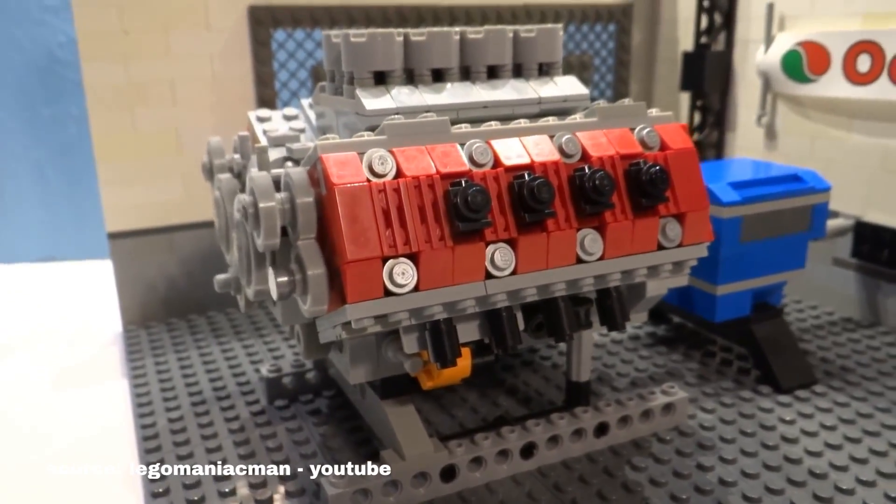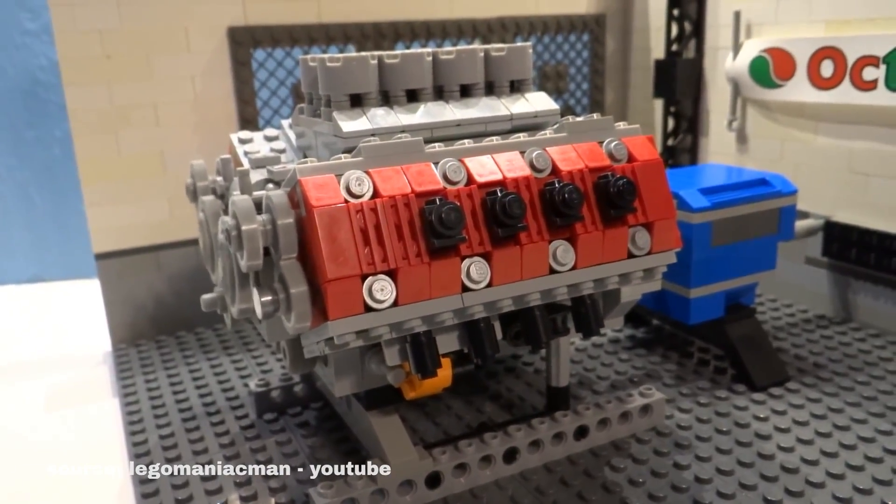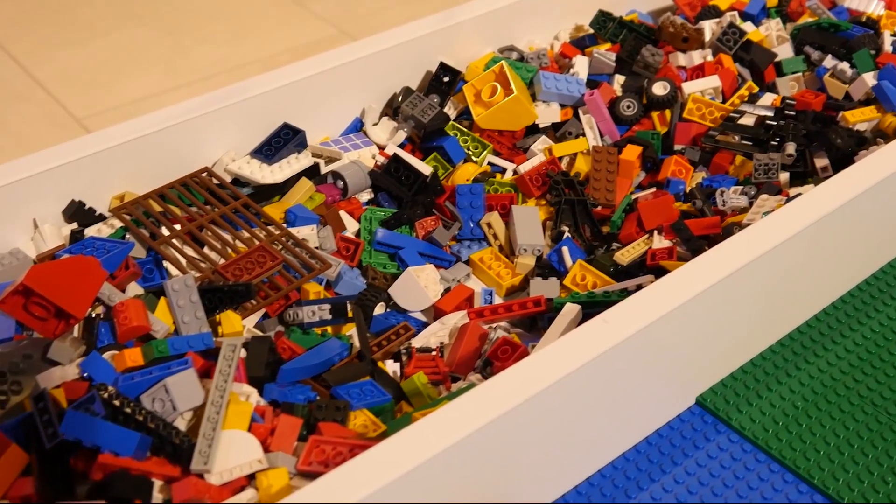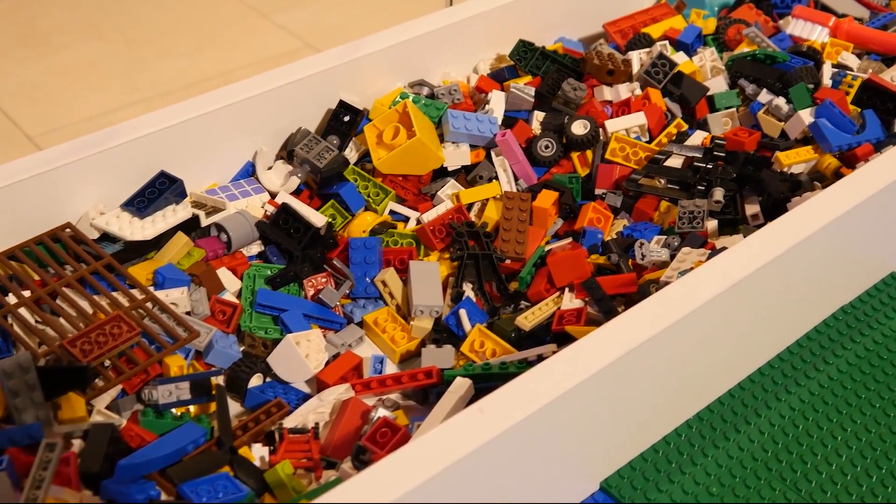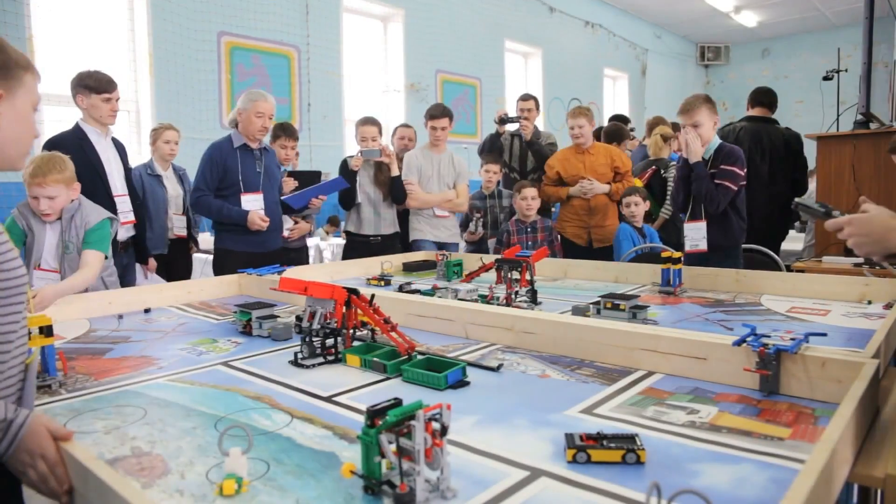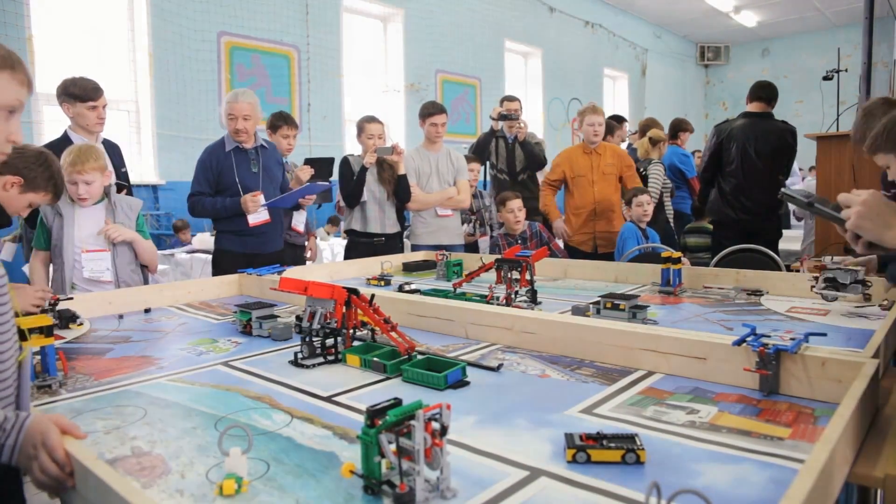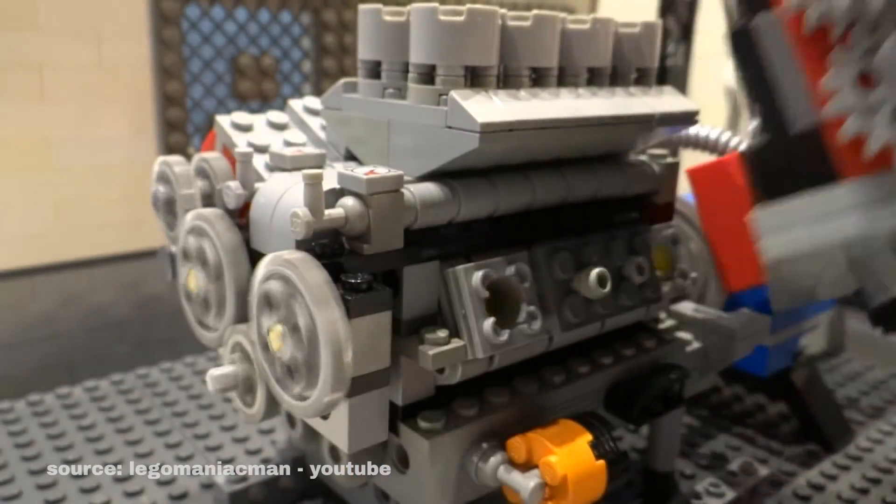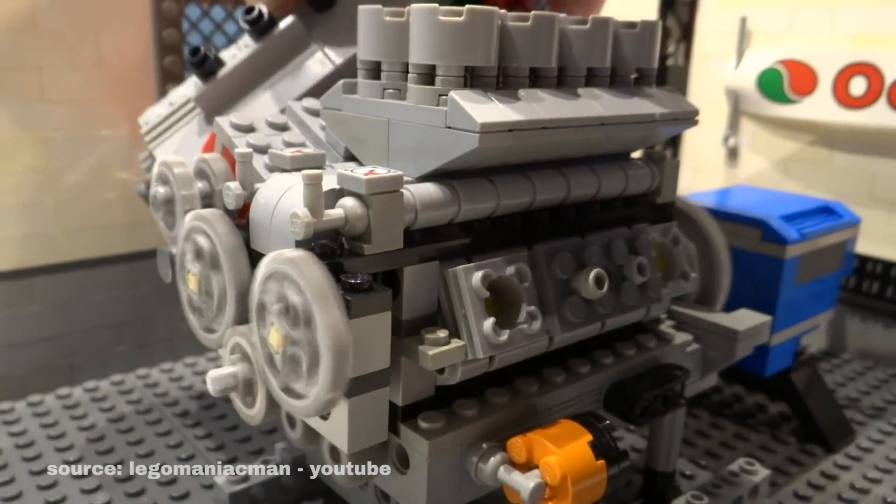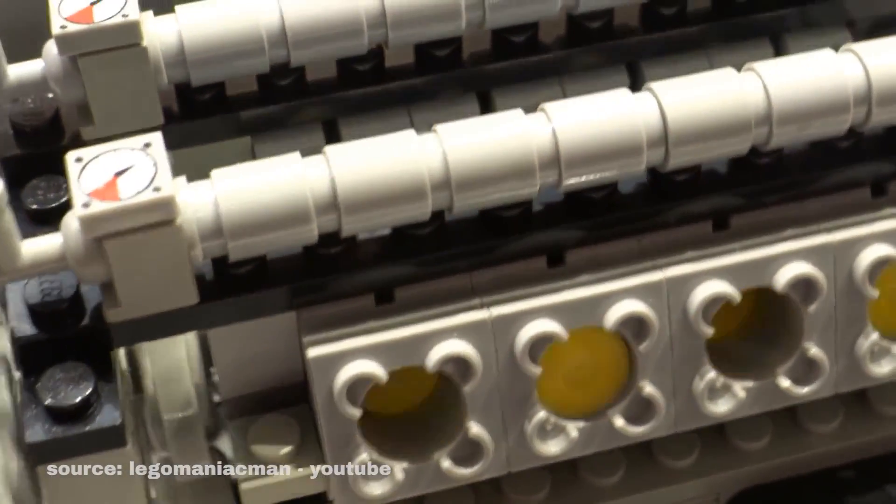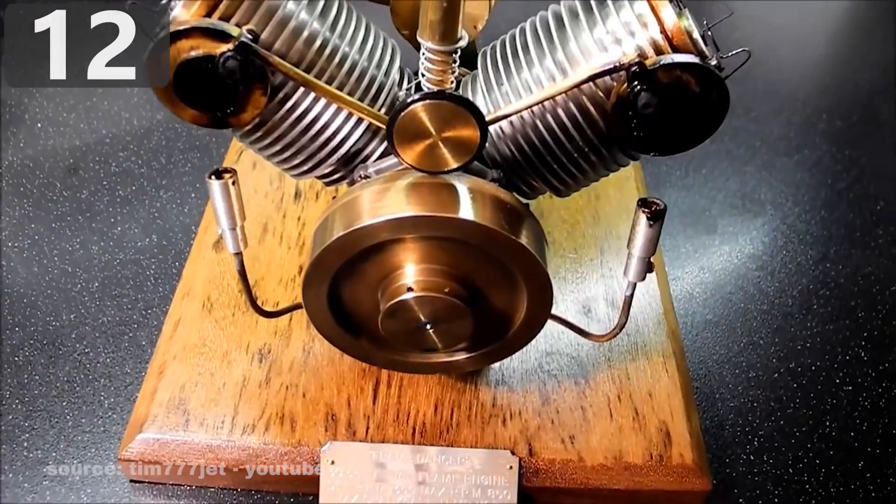One example of a build-it-yourself engine is known as the V8 engine. Made with less than 100 parts, this extremely fun and intricate toy can be enjoyed by not only kids and teens but by adults as well. With eight working cylinders, pistons, and crankshafts, this V8 model can be a great starting point for future engineers.